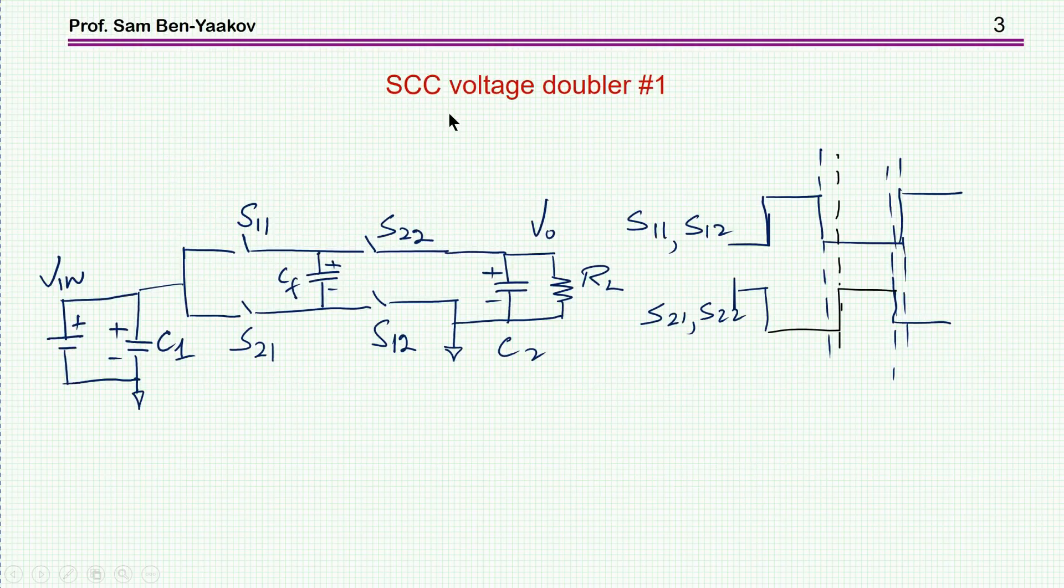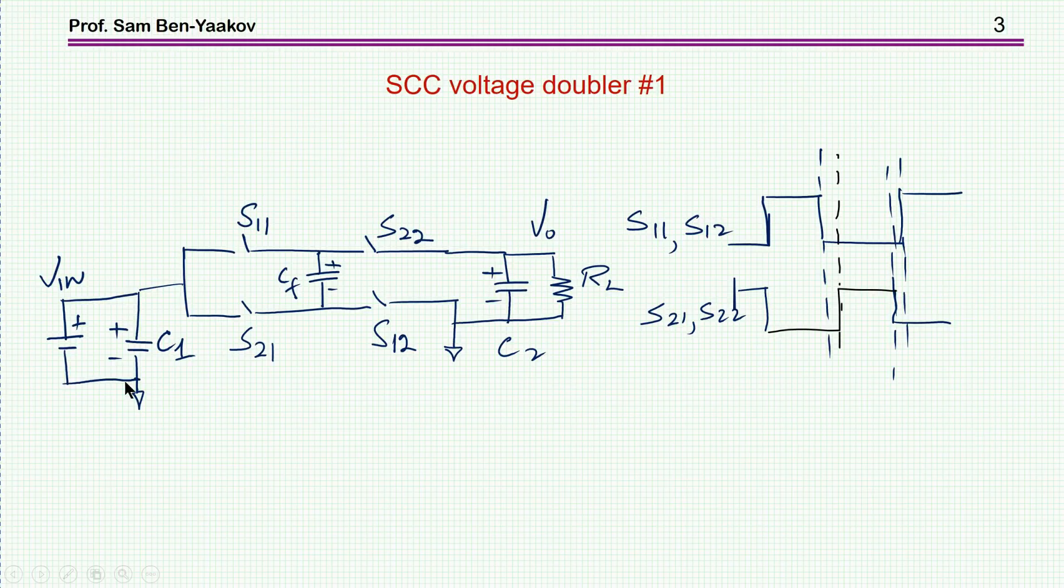The first switched capacitor converter has this topology. We have the input voltage. This is an input capacitor for capturing the ripple. There are four switches which will be implemented by MOSFETs. There is a capacitor which we call a flying capacitor, and then we have the output side with the output filter, and this represents the load.